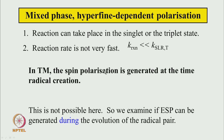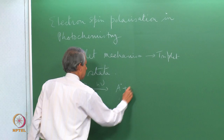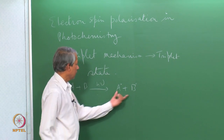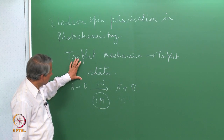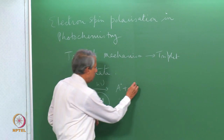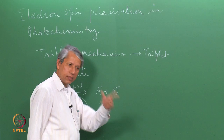In the triplet mechanism, polarization was created at the same instant the radical was created. When we observe this mixed-phase signal instead, those conditions are not satisfied. So we examine whether electron spin polarization can be generated during the evolution of the radical pair — that is, as radicals A and B separate after formation. This is the distinction from the triplet mechanism.